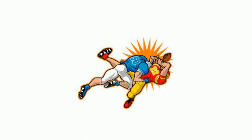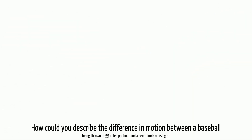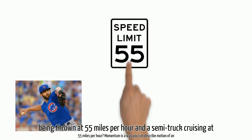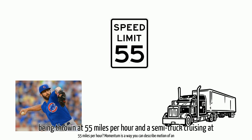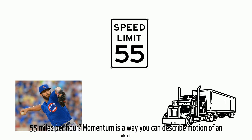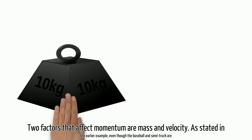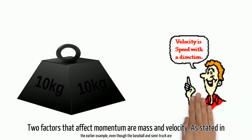What is momentum? How could you describe the difference in motion between a baseball being thrown at 55 miles per hour and a semi-truck cruising at 55 miles per hour? Momentum is a way you can describe the motion of an object. Two factors that affect momentum are mass and velocity.